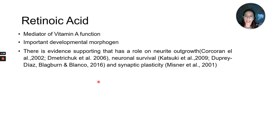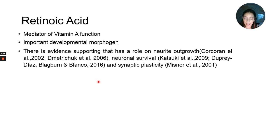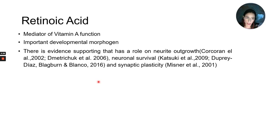One main factor we have is retinoic acid, the mediator of vitamin A. It is important for development, and there is evidence that it has a supporting role in neurite outgrowth, neural survival, and synaptic plasticity. We have proven this in our laboratory using our model.